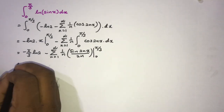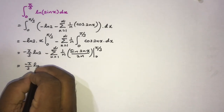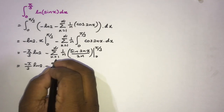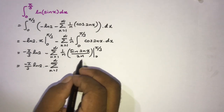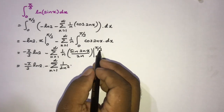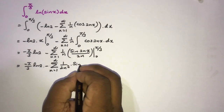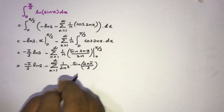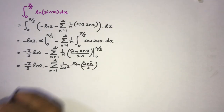So we have minus (π/3) ln(2) minus the infinite sum from n=1 to infinity of (1/(2n²)) times sin(2nπ/3).